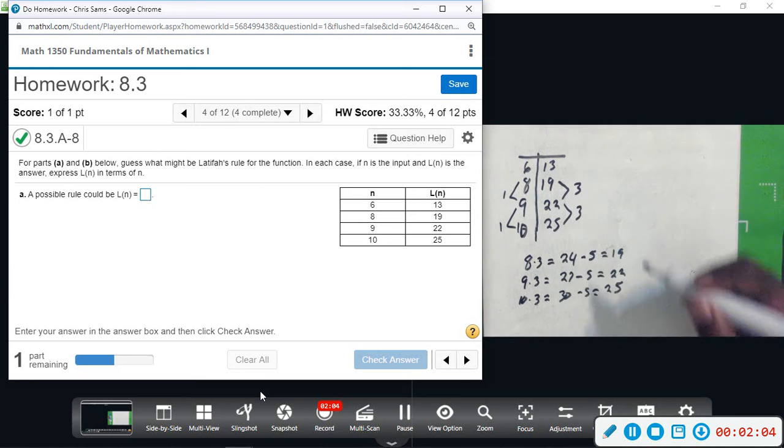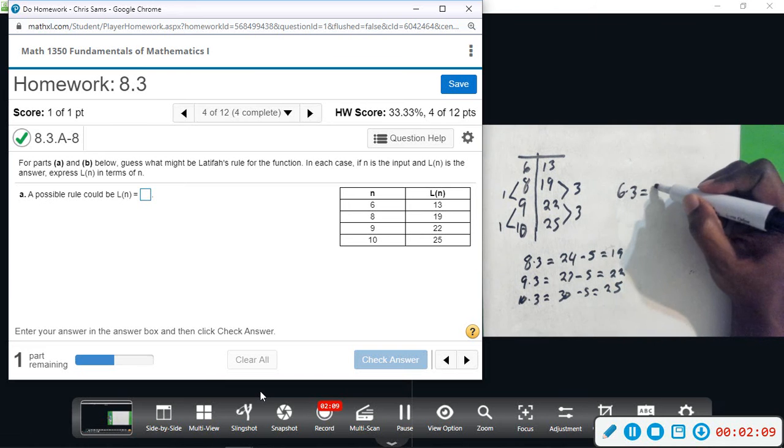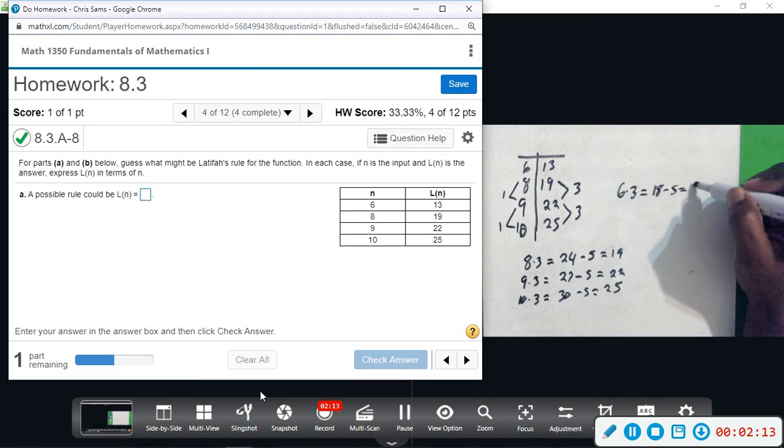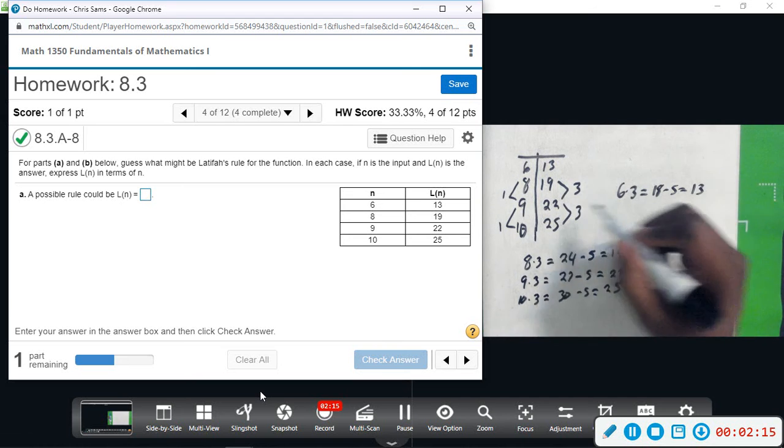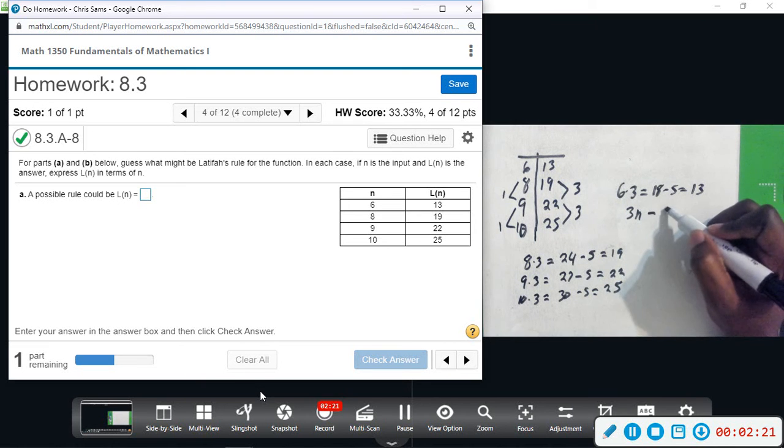All right, so let's go back to the six and verify. So if I do six times three, that gives us eighteen. And if we take away five, that gives us thirteen. Okay, so it looks like the rule is we're going to take the input and we're going to multiply it times three, so 3n, and then take away five.